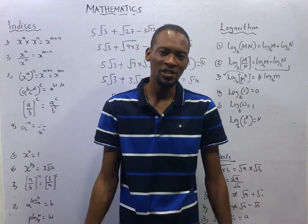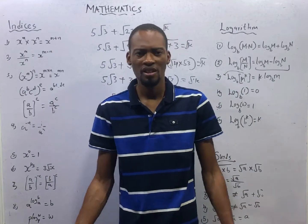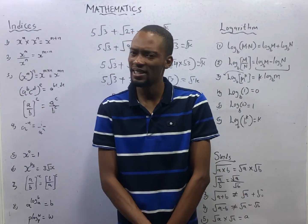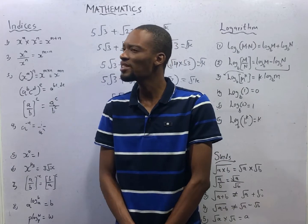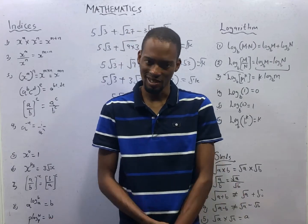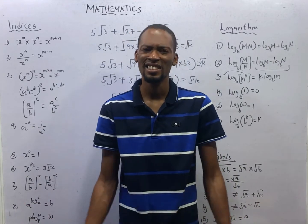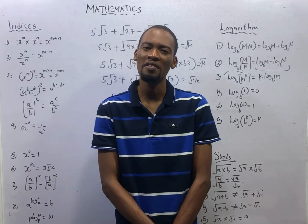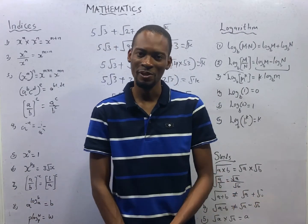So ladies and gentlemen, this brings us to the end of this episode. For your assignment, get the Flash Learners Jam app. Go to Mathematics. Choose Indices, Logarithm and Surds. Solve the questions that follow. Let me know if you have other questions. See you in the next episode.